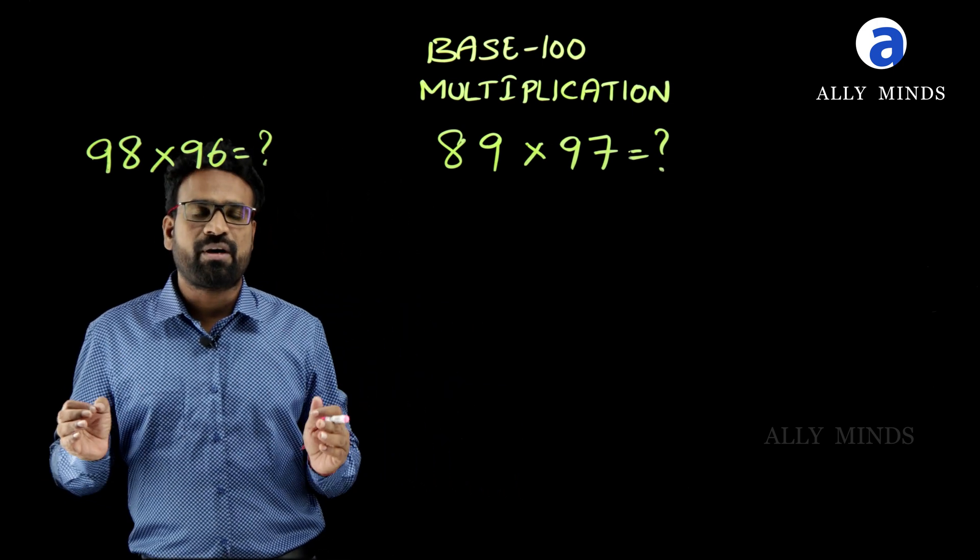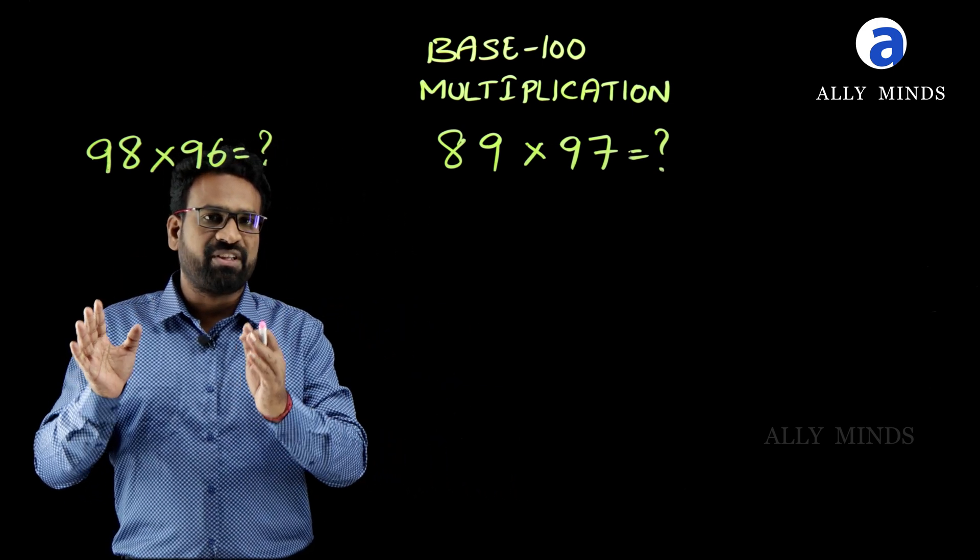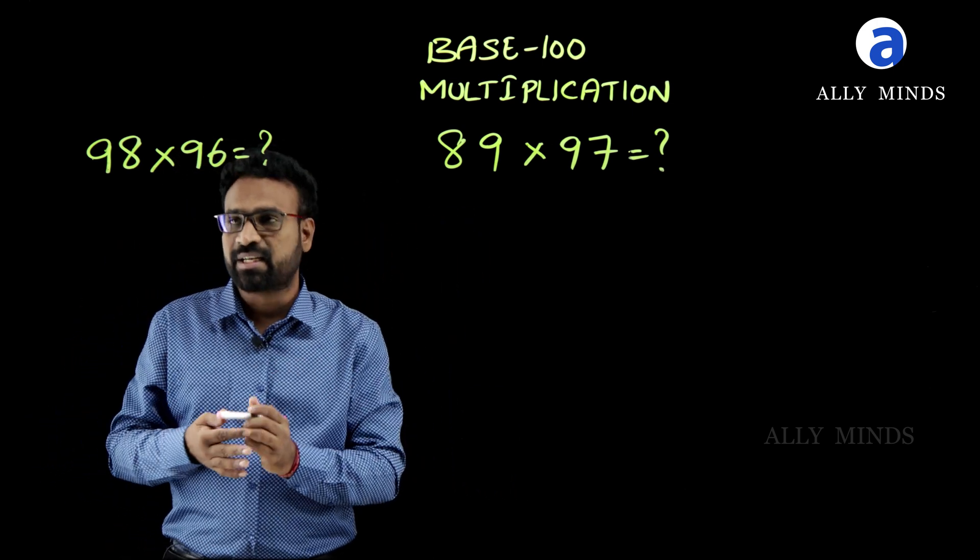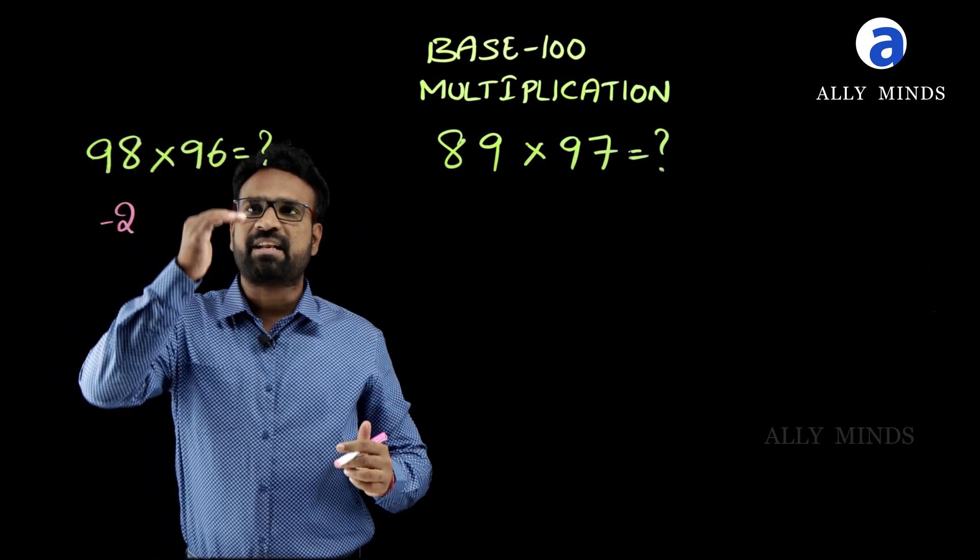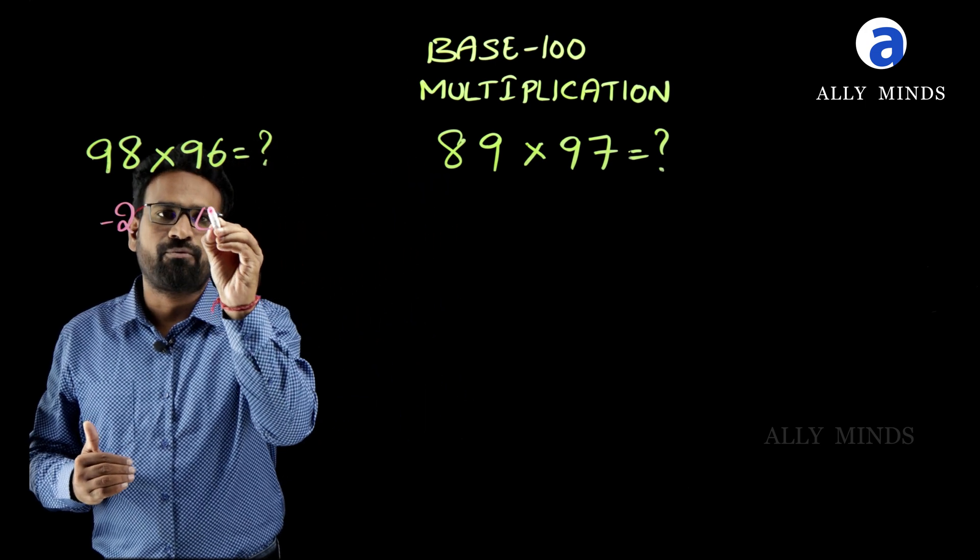100. Let us start this. First of all, you have to think of the difference between the given numbers and the base. Here the difference between 98 and base 100 is 2, and the difference between 96 and base 100 is 4.